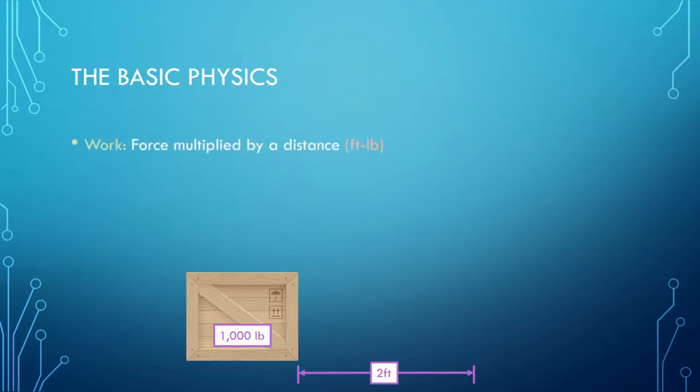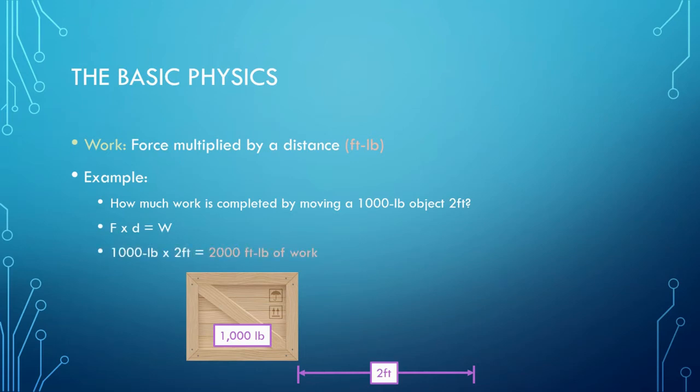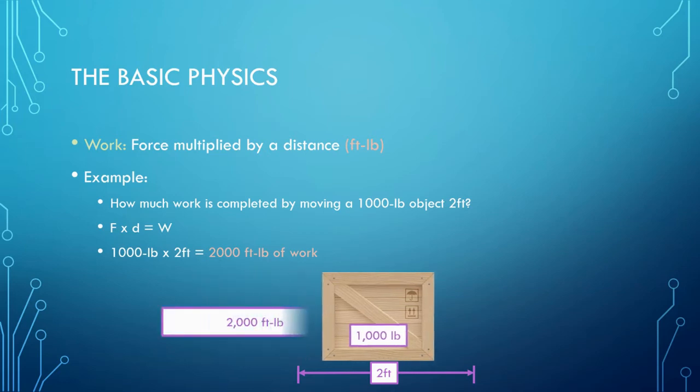The basic physics of fluid power centers around the concept of work. Work is done whenever a force is used to move something a distance. Let's see an example. How much work is completed by moving a 1,000 pound object two feet? Work times distance equals the amount of work. In this case, 1,000 pounds of force times two feet of distance equals 2,000 foot-pounds of work.